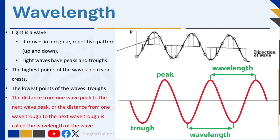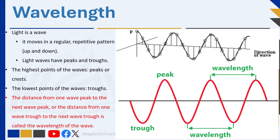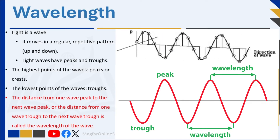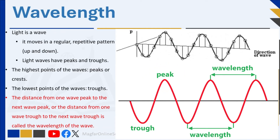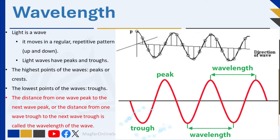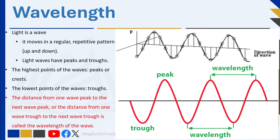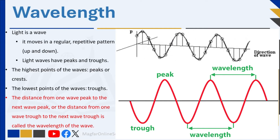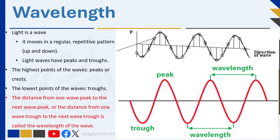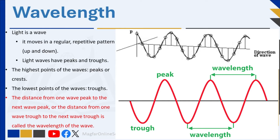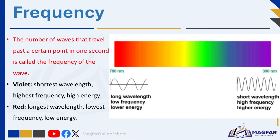The speed of light is approximately 300,000 kilometers per second. Like all other waves, light waves also have peaks and troughs. The highest points of the waves are called the peaks or crests, and the lowest points are called the troughs. Light waves have a wavelength and a frequency. The distance from one wave peak to the next, or from one trough to the next, is called the wavelength. The number of waves that travel past a certain point in one second is called the frequency.